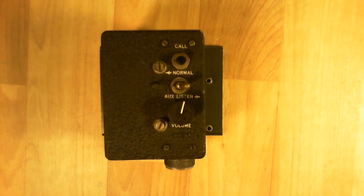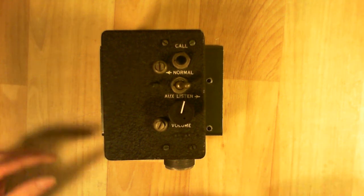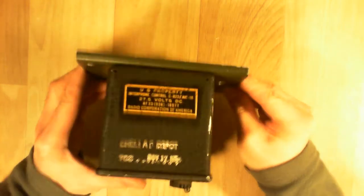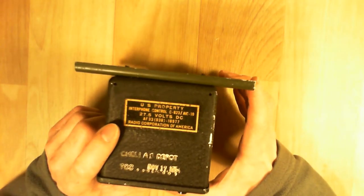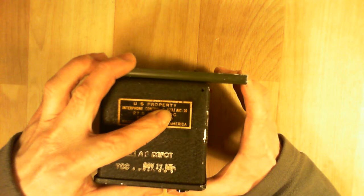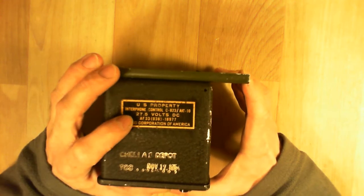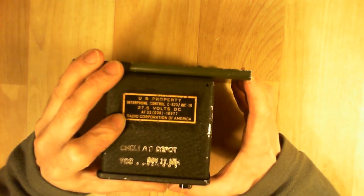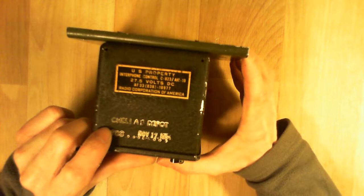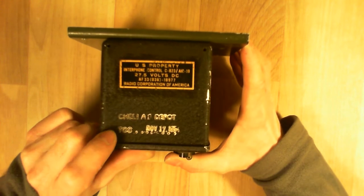Hello, I wanted to show you this very vintage box from an aircraft. It is an intercom box. US property interface control C823AIC10, Radio Corporation of America. So it is made by RCA, Shelly Air Force Depot.